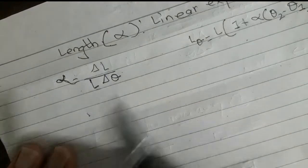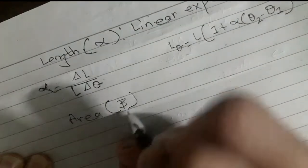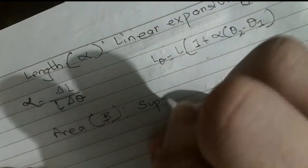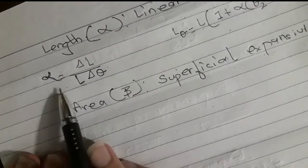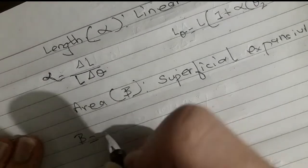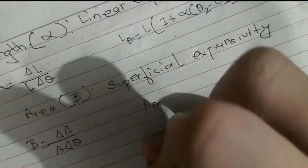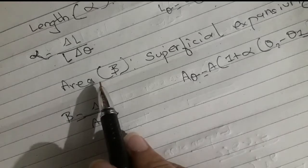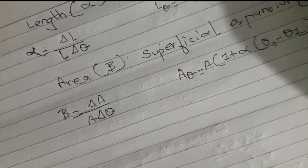For two-dimensional expansion, length times breadth gives area. The coefficient for area expansion is called superficial expansivity, denoted beta. The formula is similar to alpha: beta equals change in area divided by original area divided by change in temperature. So: A-theta = A(1 + beta·(theta 2 minus theta 1)).